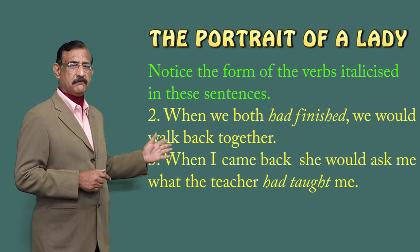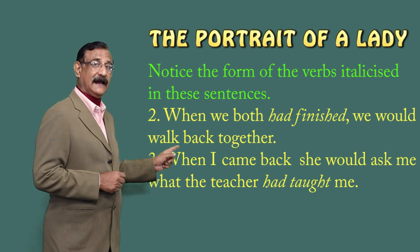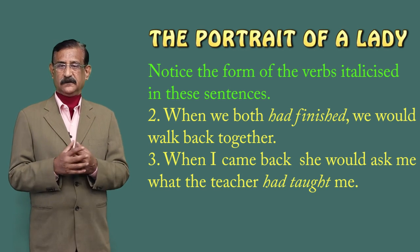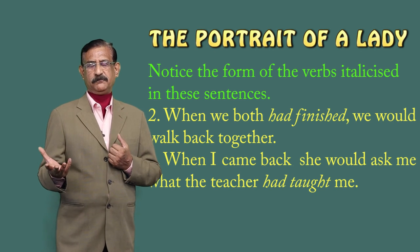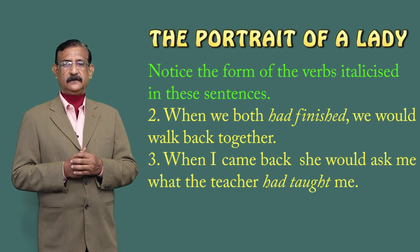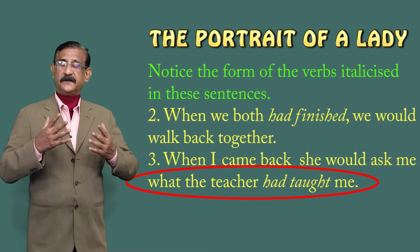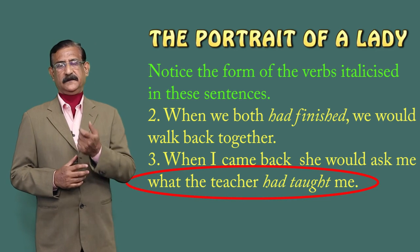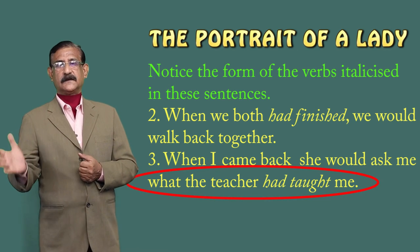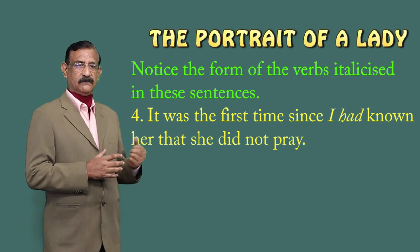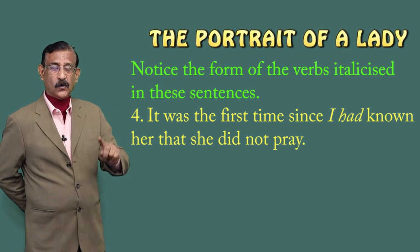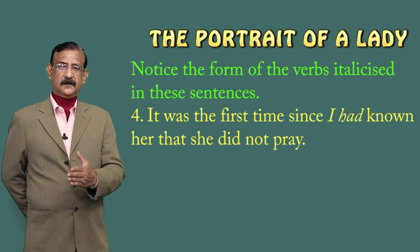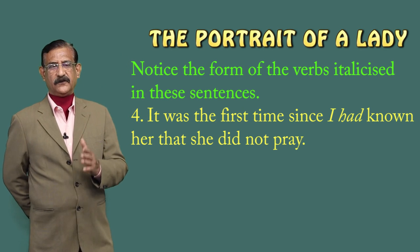Third sentence: 'When I came back, she would ask me what the teacher had taught me.' Jab main wapas aaya, to dadi poochti thi: aaj tumhe kya padhaaya gaya? — 'What the teacher had taught me.' So 'had' is used for 'tha' in Hindi, for past — and whenever 'had' is used, the third form of the verb always follows. This is seen in all these sentences where 'had' is present.